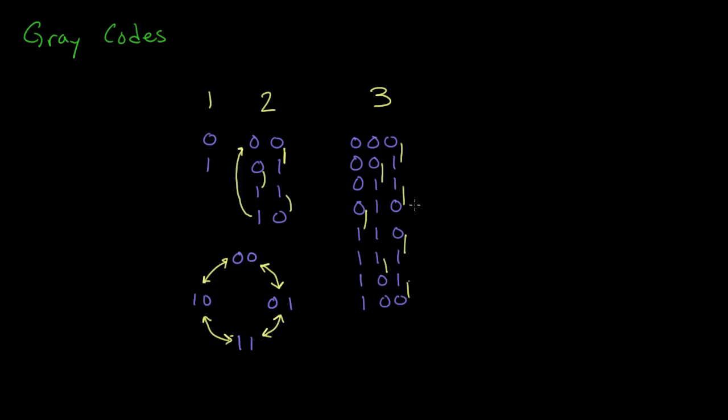So we're only changing one bit each time, and the same thing holds true. To get back to the first one, we just change that leftmost bit right there and it goes all the way back to the first one. So every single position differs from the previous one and the next one by just one bit.